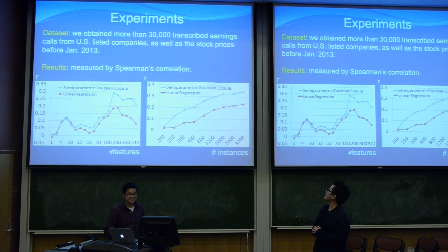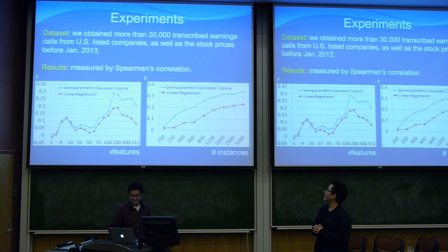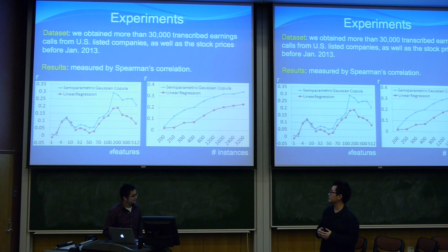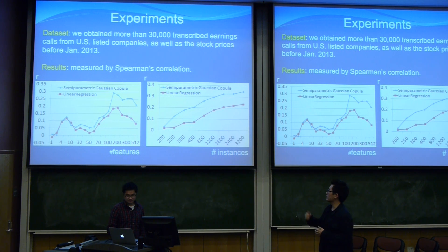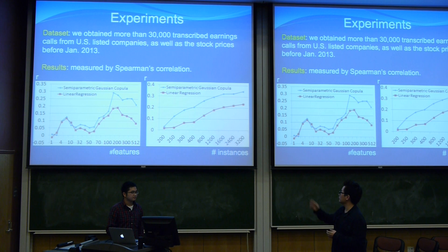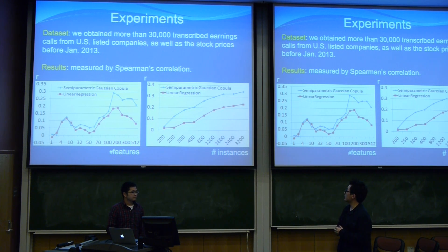For the experiment, we look at earnings calls from publicly listed U.S. companies, and we measure performance using Spearman's correlation. We compare with the standard baseline of linear regression. On the left-hand side, we show how results change as we increase the number of features — our proposed semi-parametric Gaussian copula model significantly outperforms the standard baselines. On the right-hand side, showing performance as we increase the number of instances, the model also continues to outperform linear regression.